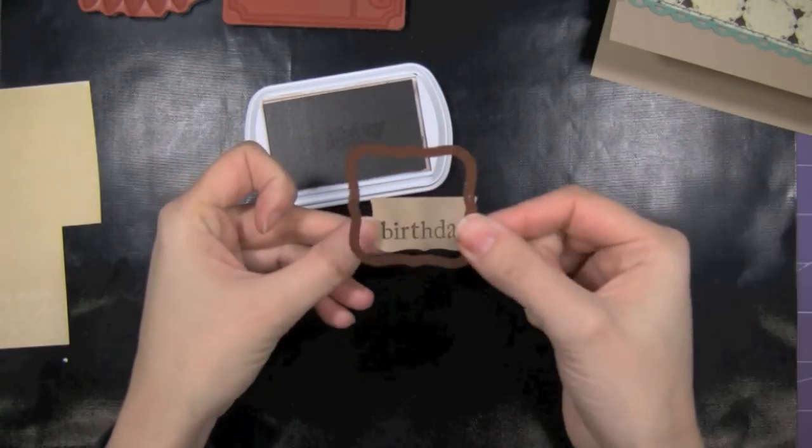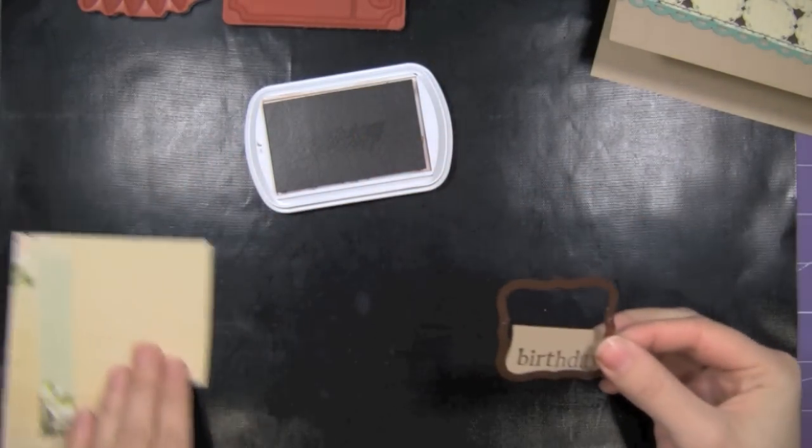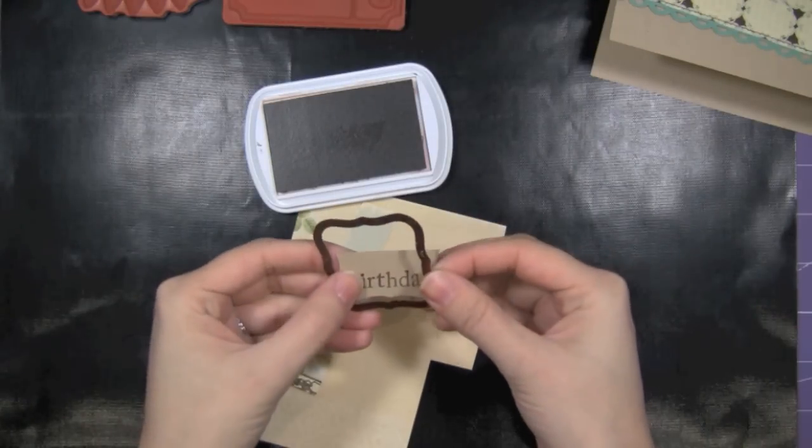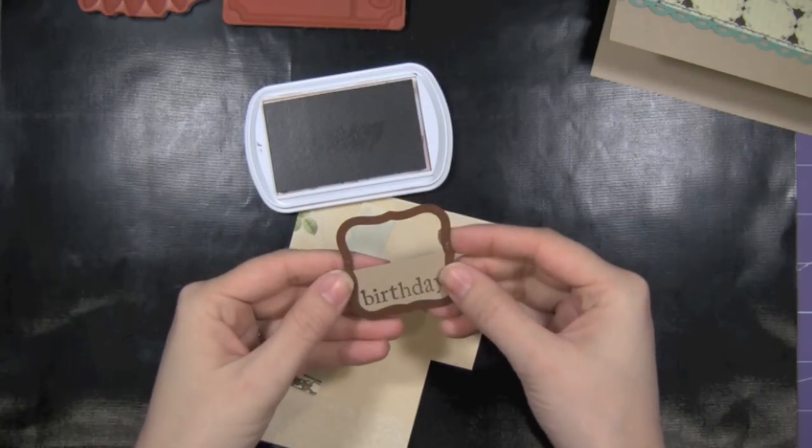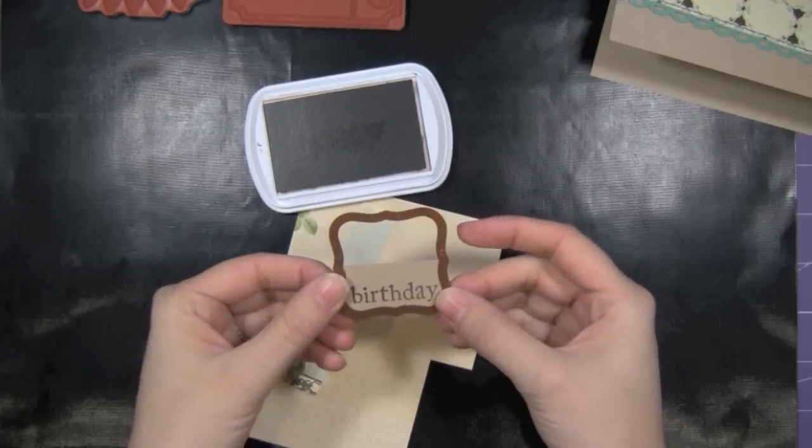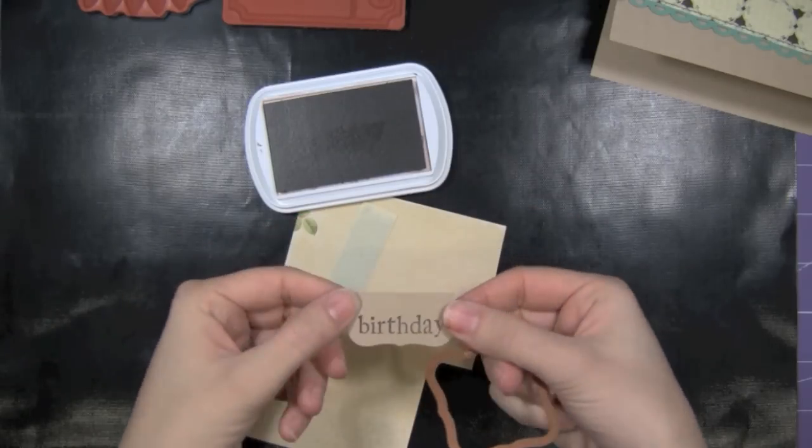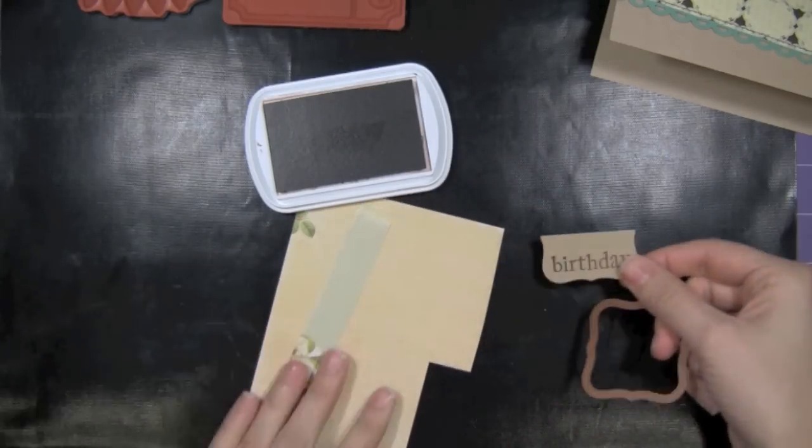Okay. So I used my spellbinder and just laid it down so it would trim out where I wanted it from that piece of paper. And now I just have like a little label with the birthday on it.